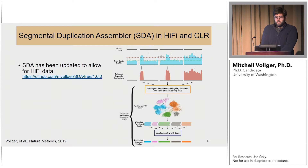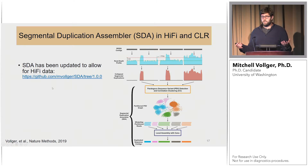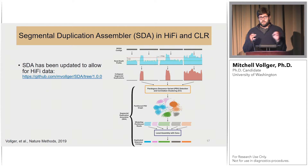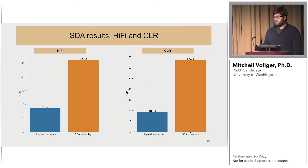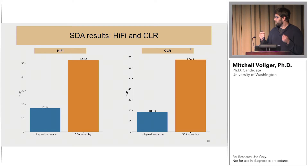SDA, the Segmental Duplication Assembler, previously only worked with CLR but now also works with HiFi — the updated branch is available online. Briefly, the process takes de novo assembly contigs, aligns reads back to them, finds regions of collapse, identifies paralogous sequence variants, phases them into groups, and creates separate assemblies for each copy of the duplication. In the HiFi assembly I find 17 megabases of collapsed sequence and translate that into 52 megabases using SDA. In CLR, 18 megabases translates to 67 megabases — CLR performs slightly better currently but improvements are in progress.